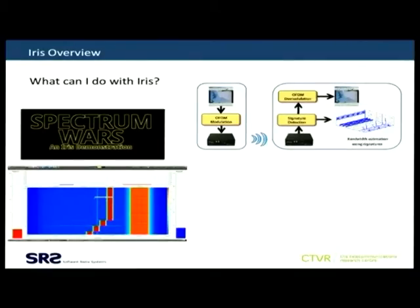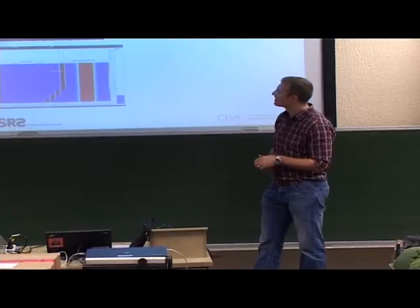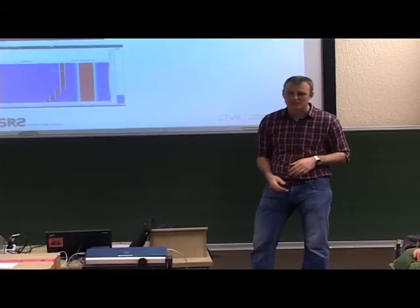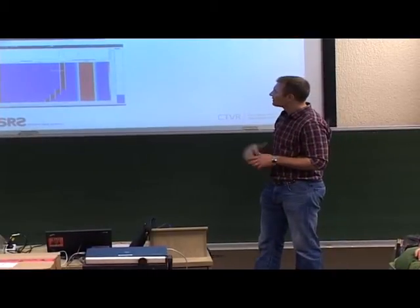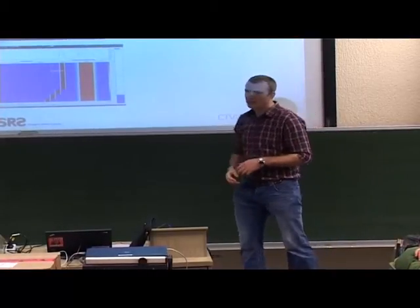A more recent demonstration was the idea of spectrum wars. The basic radio behind it is very simple — it's a game for four players using dynamic spectrum access. You've got two teams, each with a transmitter and a receiver, and you have to create a link and transfer as much data as possible. The catch is you're operating in the same spectrum band, so you can interfere with your opposing team. There are various tricks and tools you can use, and there is a primary user you have to avoid interfering with as well.